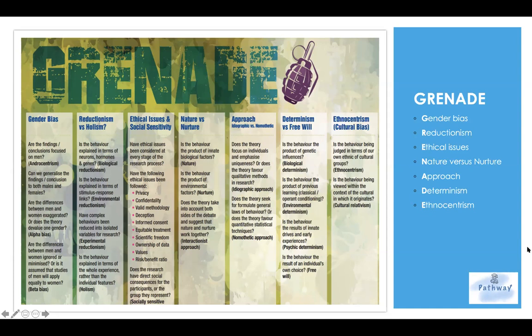The last E is ethnocentrism, also called cultural bias. Questions concerning ethnocentrism ask whether behavior is being judged in terms of our own cultural group's ethics. There is also an approach called cultural relativism, which concerns whether behavior is being viewed within the context of the culture in which it originates. These are the criteria of the issues and debates that you have to take into account.